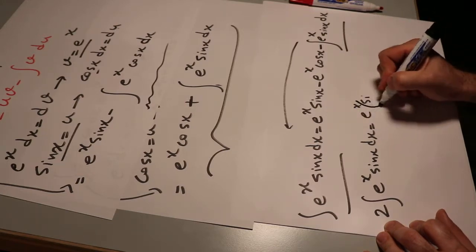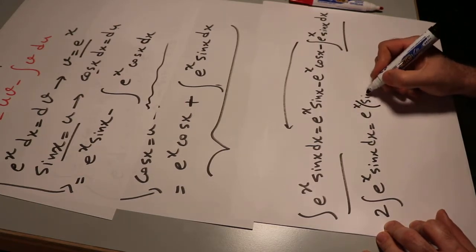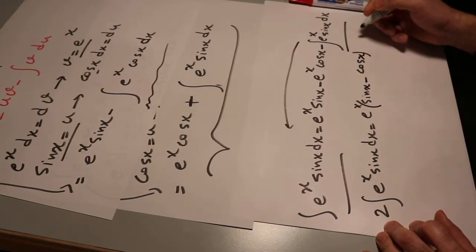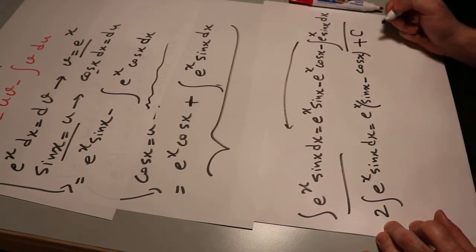e^x sin x minus e^x cos x. But in fact, I can factor e^x, that will be e^x times (sin x minus cos x). I add this constant of the integral as well.